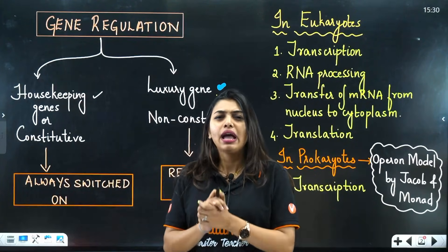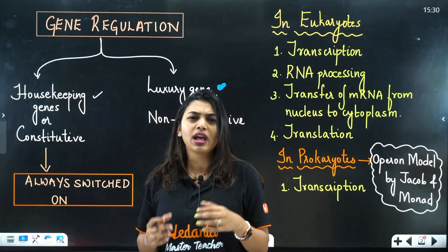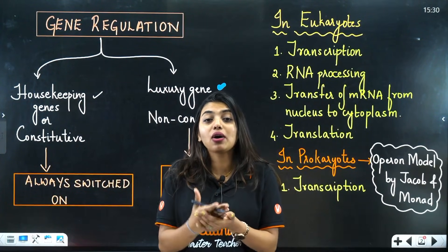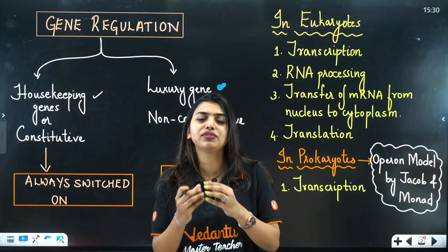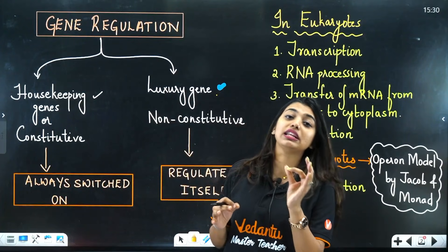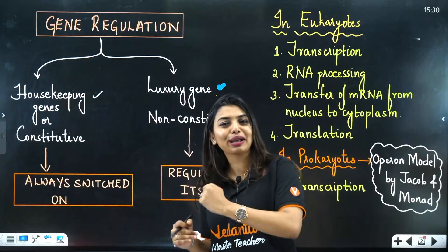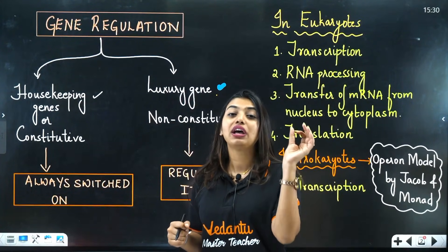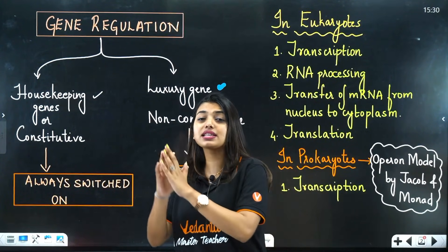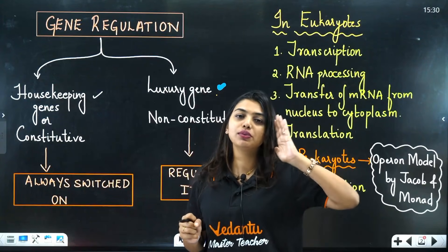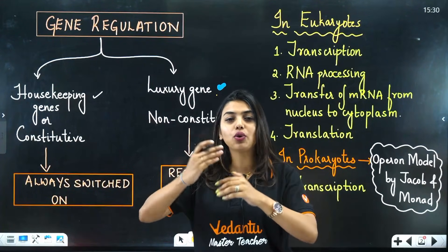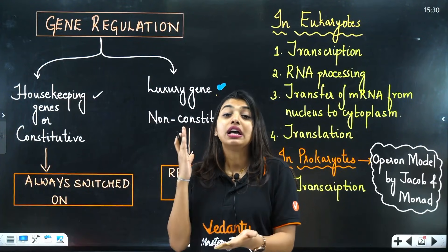From the name itself you can understand — a housekeeper works all the time, right? Same way, housekeeping genes do not get switched off; they are continuously working. Luxury genes, on the other hand, get to take breaks — they switch off when not needed and switch on when needed again.